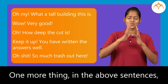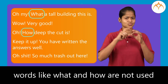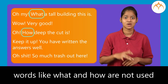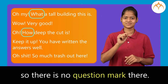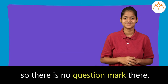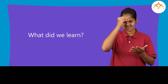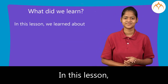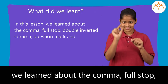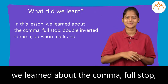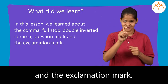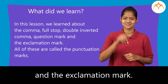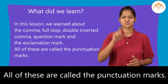One more thing: in the above sentences, words like what and how are not used to ask questions, so there is no question mark there. What did we learn? In this lesson, we learned about the comma, full stop, double inverted comma, question mark, and the exclamation mark. All of these are called the punctuation marks.